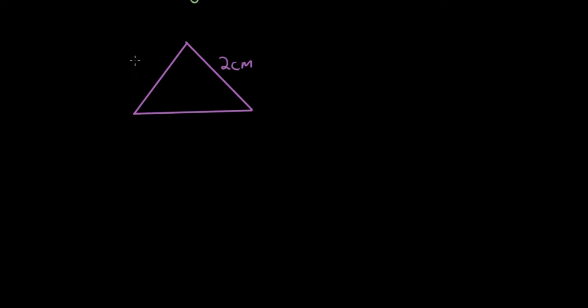So let's draw a right angle triangle. This time I'm going to put 2 cm on every side and make it an equilateral triangle with 2 cm on every side, which means all three angles will be 60 degrees. Now what we want to do is cut this triangle in half vertically downwards.